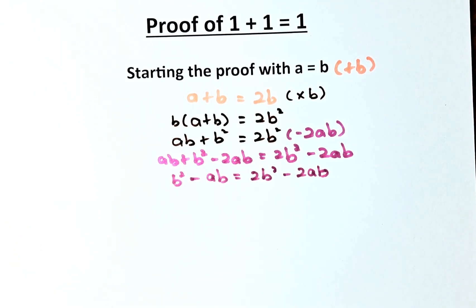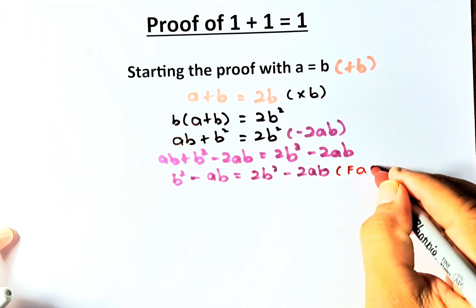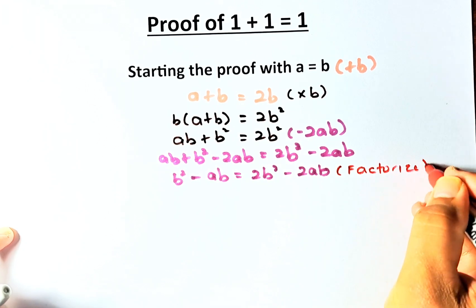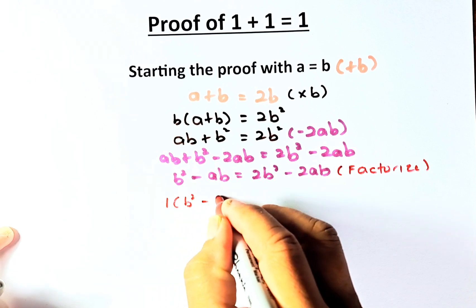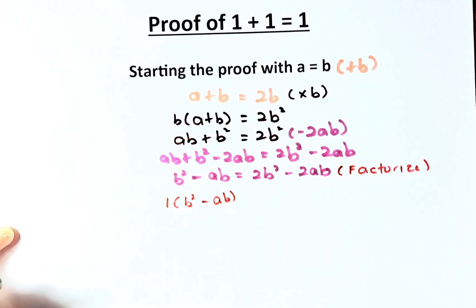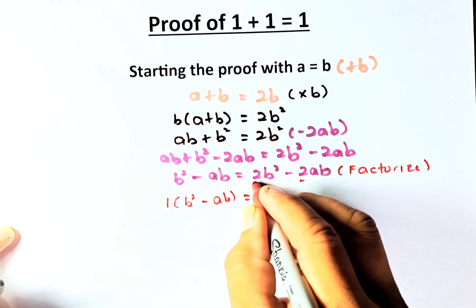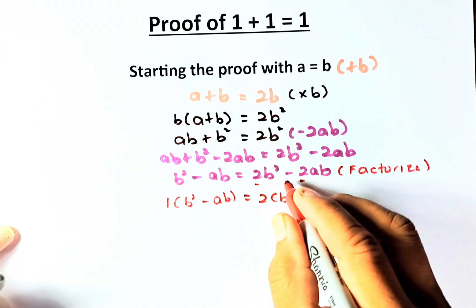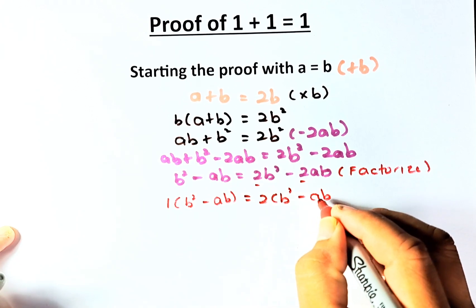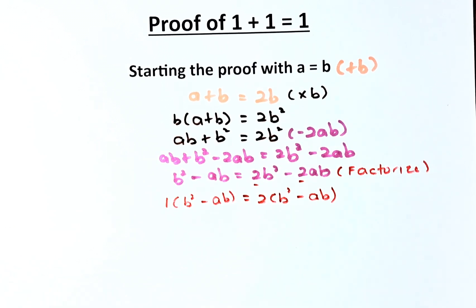The next step, we are going to factorize both sides of the equation. When we factorize, it's going to be 1 bracket b squared minus ab, just put a 1 there. And then here, we're going to take out 2, 2 is common, so 2 bracket b squared minus ab.